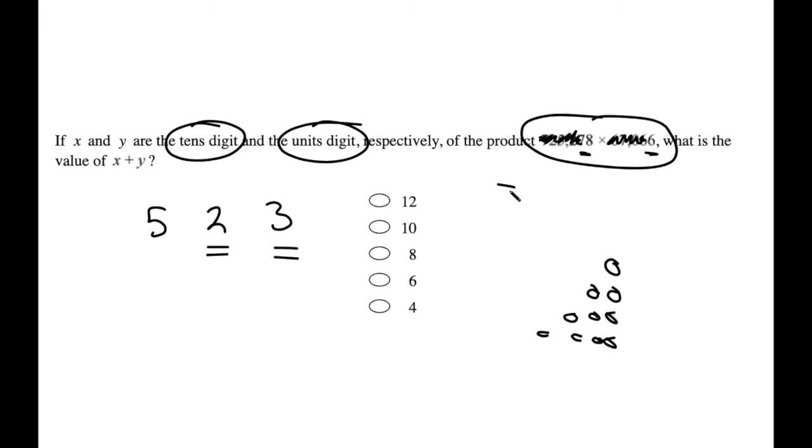So I can just take this and do 78 times 66 on my calculator. I think that gives me something like 5148, right? And look at the last 2 digits, 8 and 4. Great. 8 plus 4 is 12. So A is the answer.